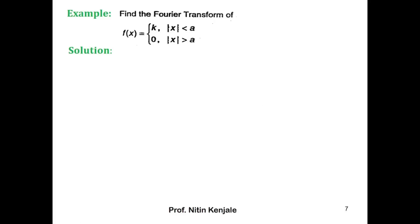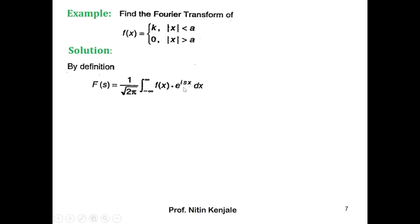Whenever x is between minus a and a, f of x takes value k. So by the definition of Fourier transform, F of s is given by 1 by root 2π into the integral of f of x into e raised to isx dx over the limit minus infinity to infinity. Now we split this interval from minus infinity to infinity into three parts.